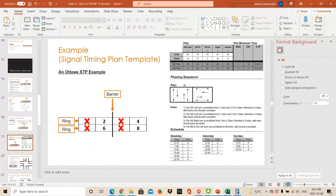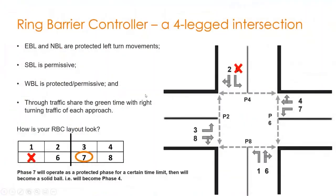Now let's make it more complex. If the eastbound left and northbound left are included, with the standard ring barrier design: eastbound left is phase three and is protected, so it has its own dedicated phase. Northbound left is also protected with its own dedicated phase. After operating their green time, they go fully red — they do not turn to a solid ball, because they are protected left turn movements.